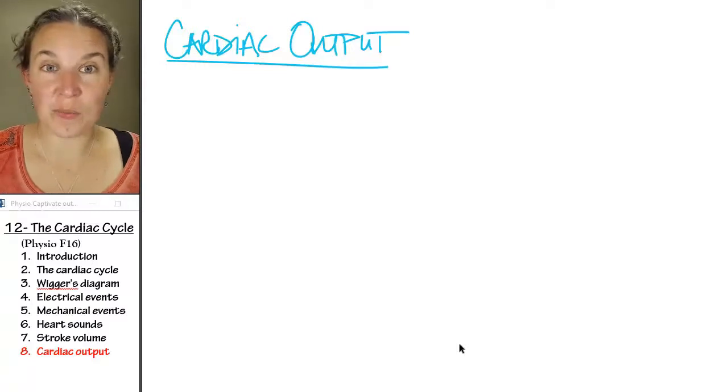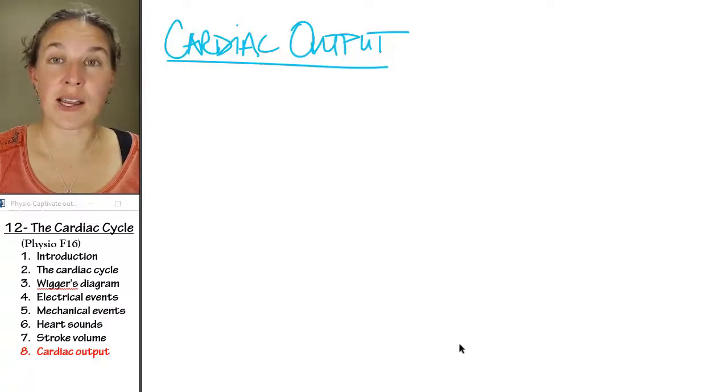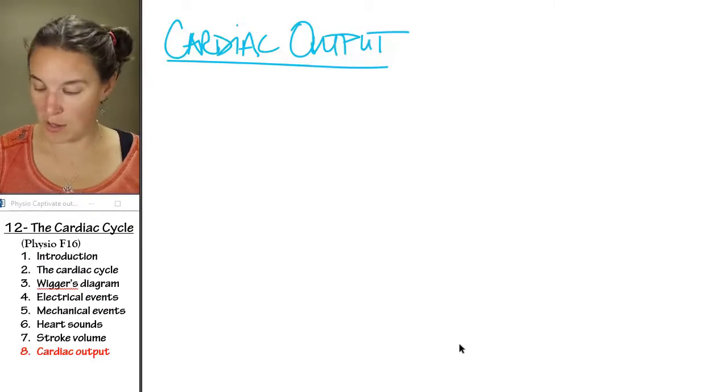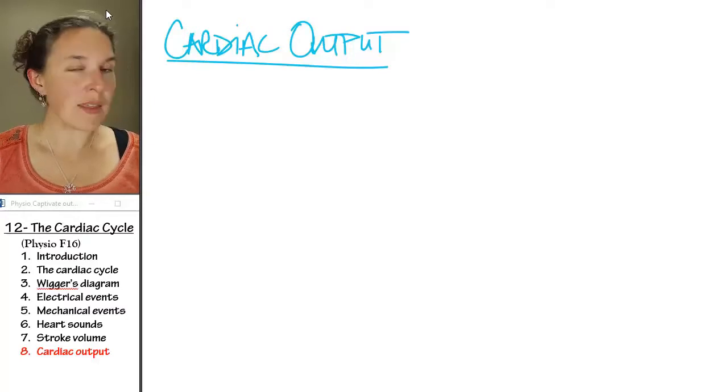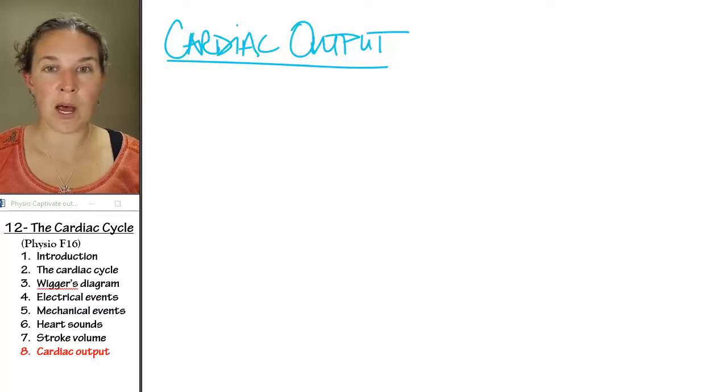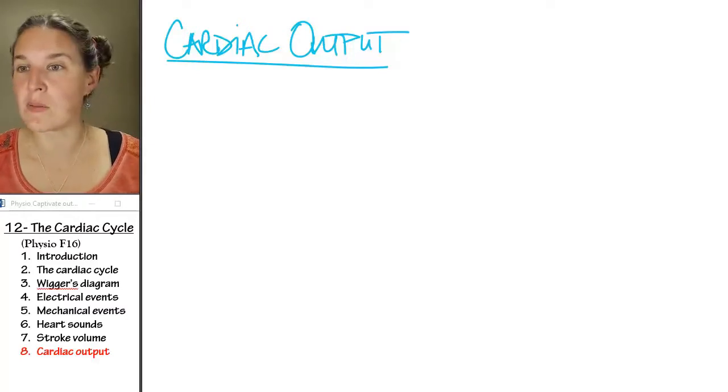We can use the stroke volume to calculate our cardiac output, and that's known as the amount of blood, the volume of blood that is pumped to the whole body in a minute. So let's write that down.